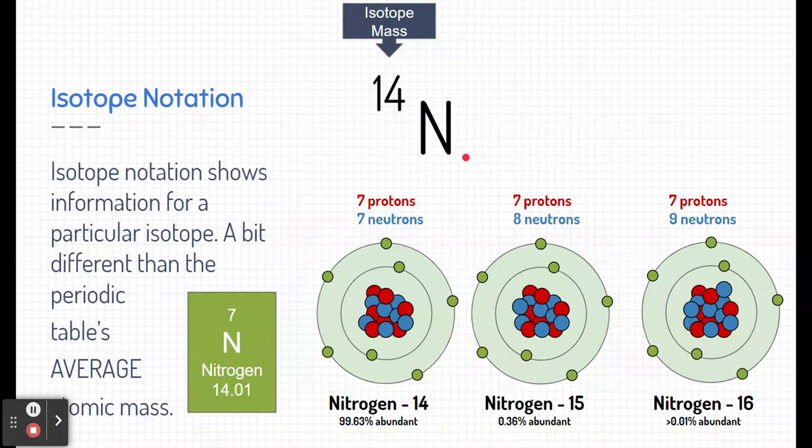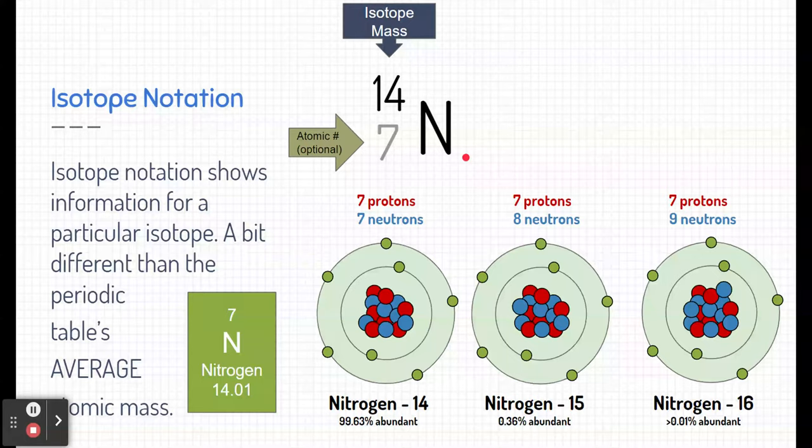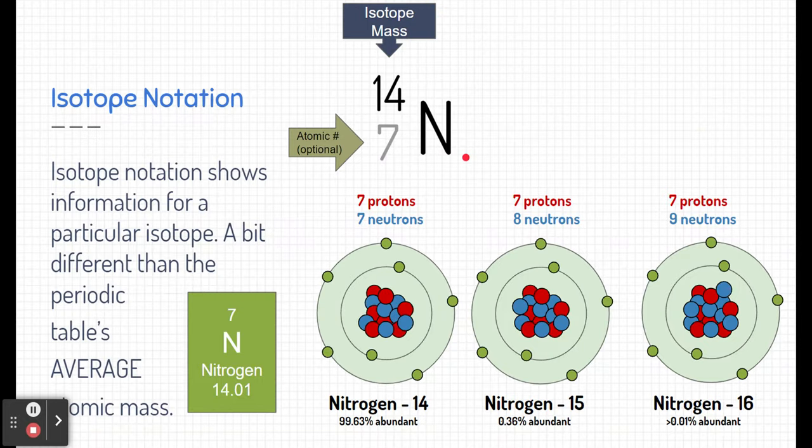Now, sometimes in textbooks or written out, you might also see a number down here below that. That's just the atomic number, and in all honesty, it's completely optional. You don't need to write that number there. I don't like to write that number there because it's redundant. We know it's nitrogen, and only nitrogen gets seven protons. It's the only atom with the atomic number of seven.